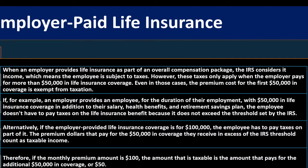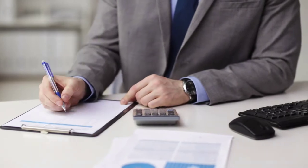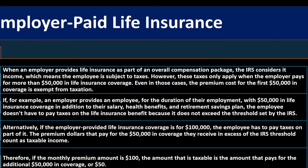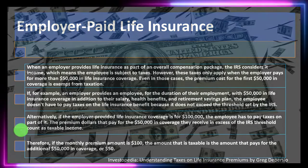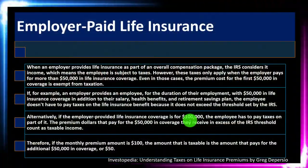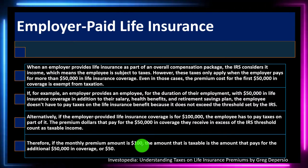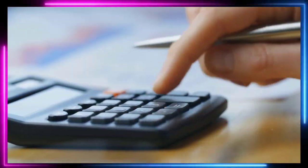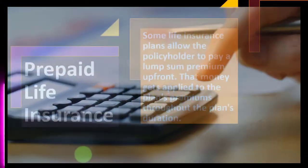If you were set up that way, on your W-2 you might have part of that benefit included in line one as taxable income. For example, if the monthly premium is $100 and the coverage is $100,000, the taxable amount is the portion paying for the additional $50,000 in coverage — that is, $50. Using the ratio, 50% of the $100 premium, or $50, was over the threshold and would be included in your W-2 line one, adding to your taxable income. So that wraps up employer-paid life insurance. Now let's move on to prepaid life insurance.